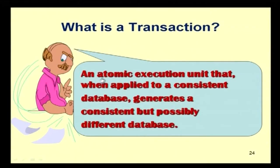When we talk about concurrency — two users using the database — or when we talk about recovery, getting back to the original consistent state, we always talk in terms of transactions, not individual database operations. A transaction is an atomic execution unit that, when applied to a consistent database, generates a consistent but possibly different database. If only a read transaction, the database state may be the same; if insert, update, or delete, it will be changed.